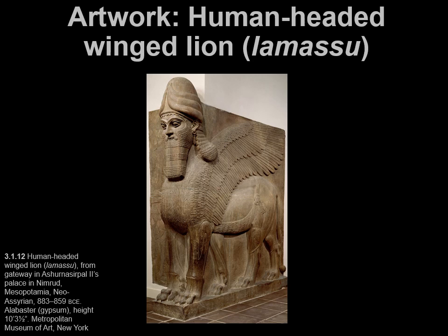There's actually an inscription that goes along with this sculpture. It says: 'The beasts of the mountains and seas, which I had fashioned out of white limestone and alabaster, I had set up in the palace gates. I made the palace fittingly imposing.' So clearly this is a palace work of art, and it is supposed to identify the power of the Assyrian leaders and their knowledge — the wings and eyes of an eagle. It really embodies their power and their status as a ruler.